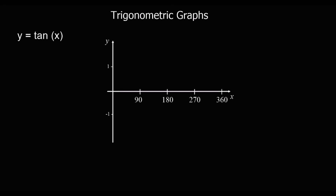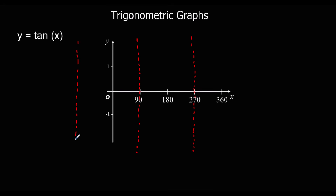Now we're going to look at the graph of y equals tan x between 0 and 360 degrees. The graph of y equals tan x is different to cos and sin — tan is not a wave. It repeats every 180 degrees, not every 360 degrees, and we have lines called asymptotes in it. At 90 degrees we've got an asymptote, and it repeats every 180 degrees, so we've got another asymptote at 270. Every 180 degrees on the tan graph, we get an asymptote.